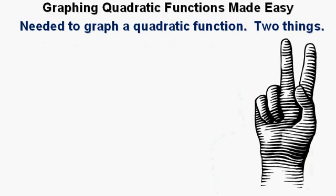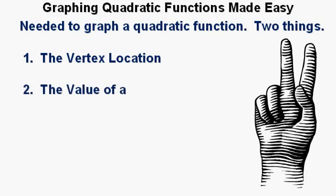In order to graph a quadratic function, it's necessary to have two things: first, the location of the vertex of the parabola, and secondly, the value of a.